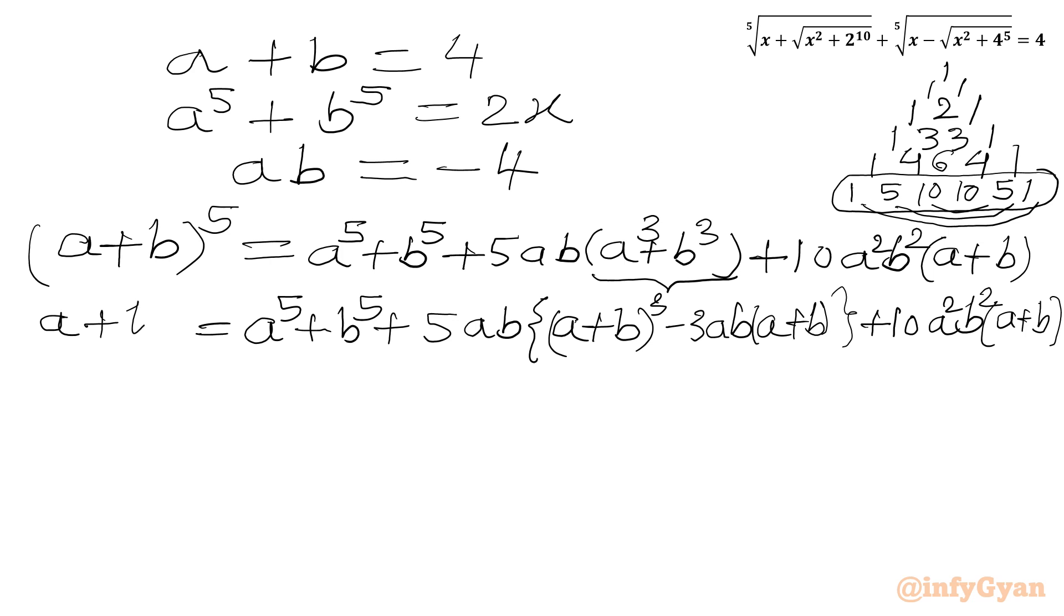Now we have to apply the values. So a plus b. First equation 4. I will write 4 power 5. Equal. a power 5 plus b power 5. Second equation. We can write 2x. Plus 5ab. So I can write 5 times minus 4. Then in curly bracket we will be writing a plus b whole cube. So 4 cube I will write directly, 64 minus 3 times ab. So I can write 3 times minus 4, a plus b is 4, bracket close, 10 times a square b square minus 4 square, so 16, times a plus b, so 4.